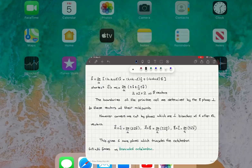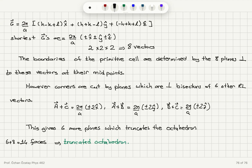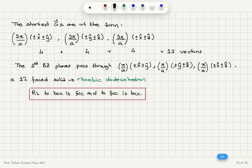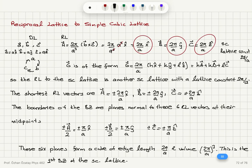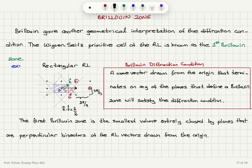In summary: for the FCC direct lattice, the reciprocal lattice is BCC and the first Brillouin zone is a truncated octahedron. For the BCC direct lattice, the reciprocal lattice is FCC and the first Brillouin zone is a rhombic dodecahedron. For the simple cubic lattice, both the reciprocal lattice and first Brillouin zone are simple cubic. Any wave vector from the origin whose tip ends on a Brillouin zone boundary will produce constructive interference.